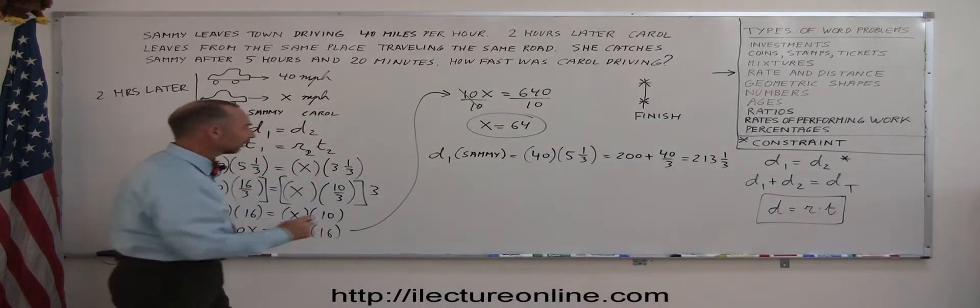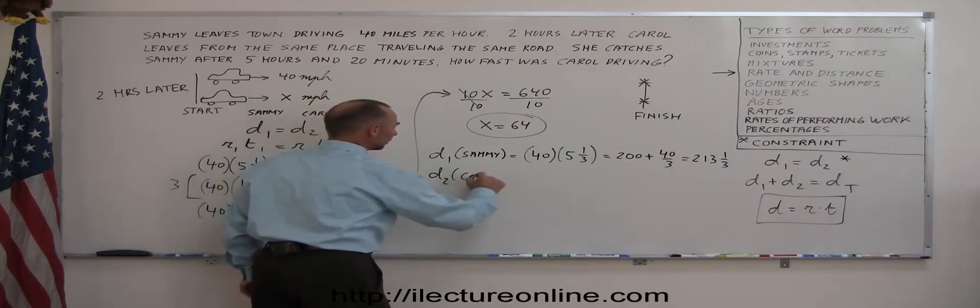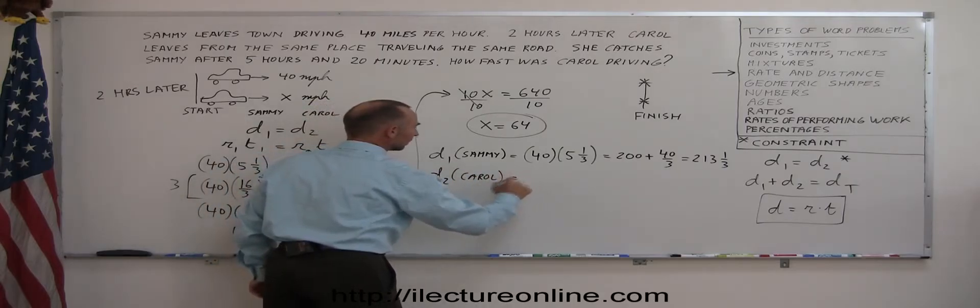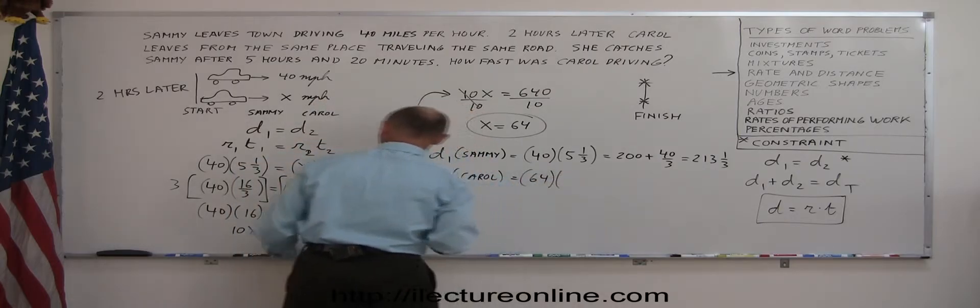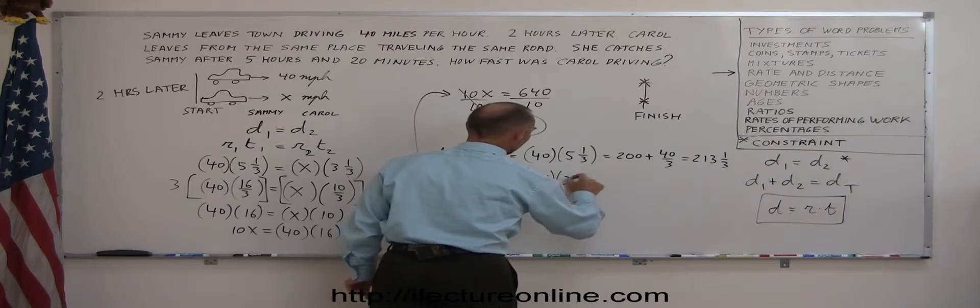We'll do the same for Carol. Distance 2 for Carol. She travels faster at 64 miles per hour. And she travels for 3 hours and a third. So 3 and a third.